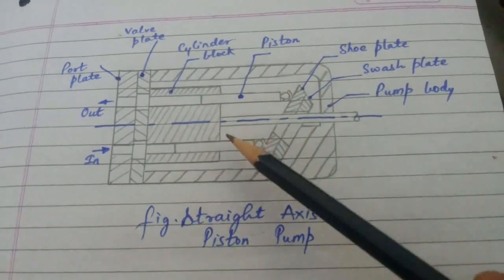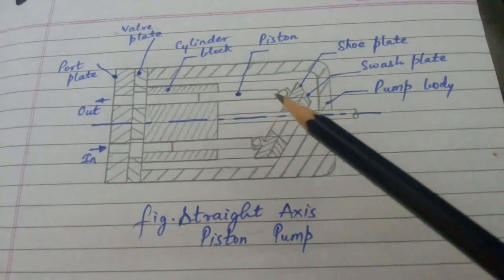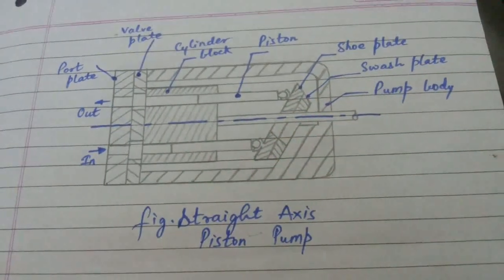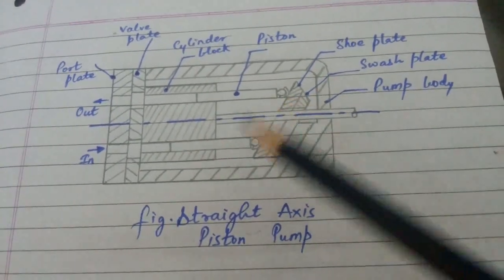Pistons are inserted in the bore and the other end of the piston is connected to the shoe plate. As you can see over here, with the shoe joint, there is a shoe joint.